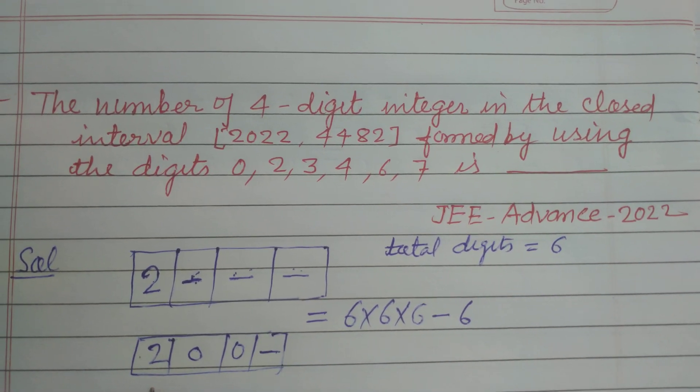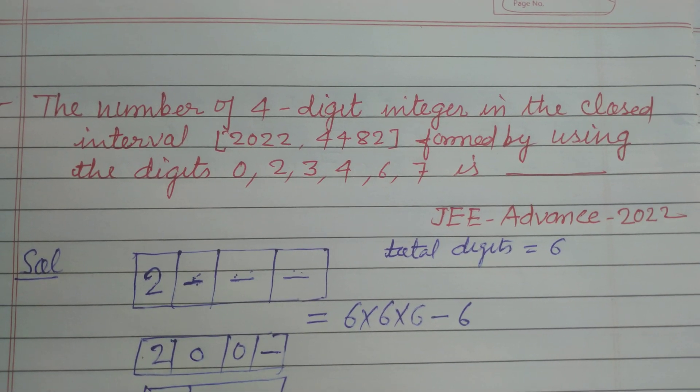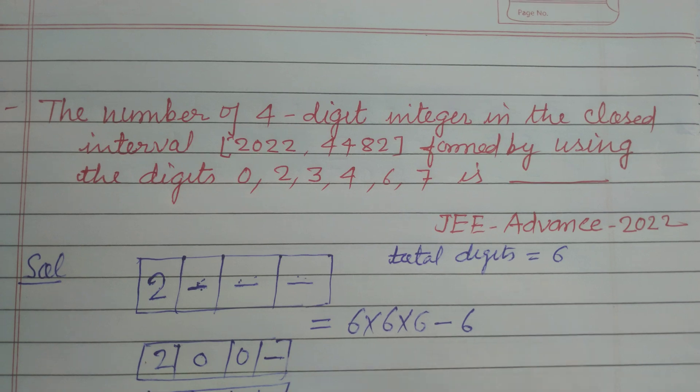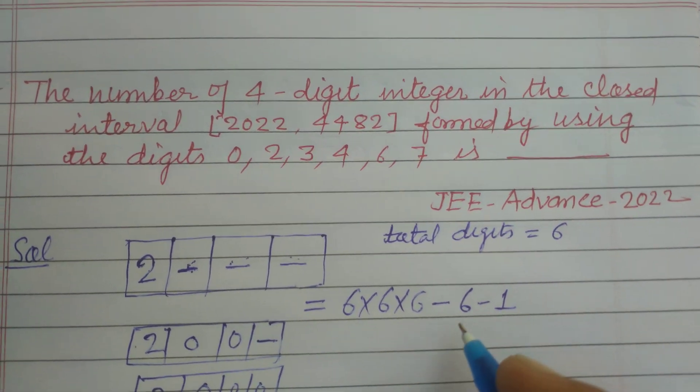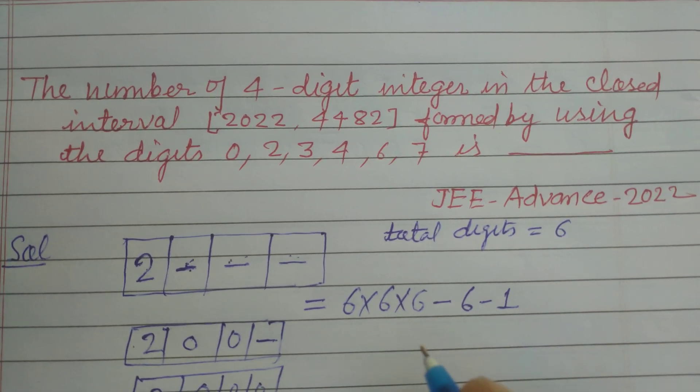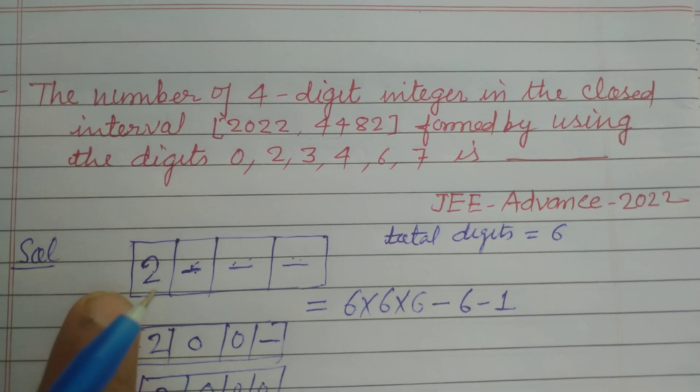Now when we put here 0, 0, 0, 2, 0, 0, 0, this is also not coming under our criteria. So this is the number of ways when we put 2 at 1000 place.